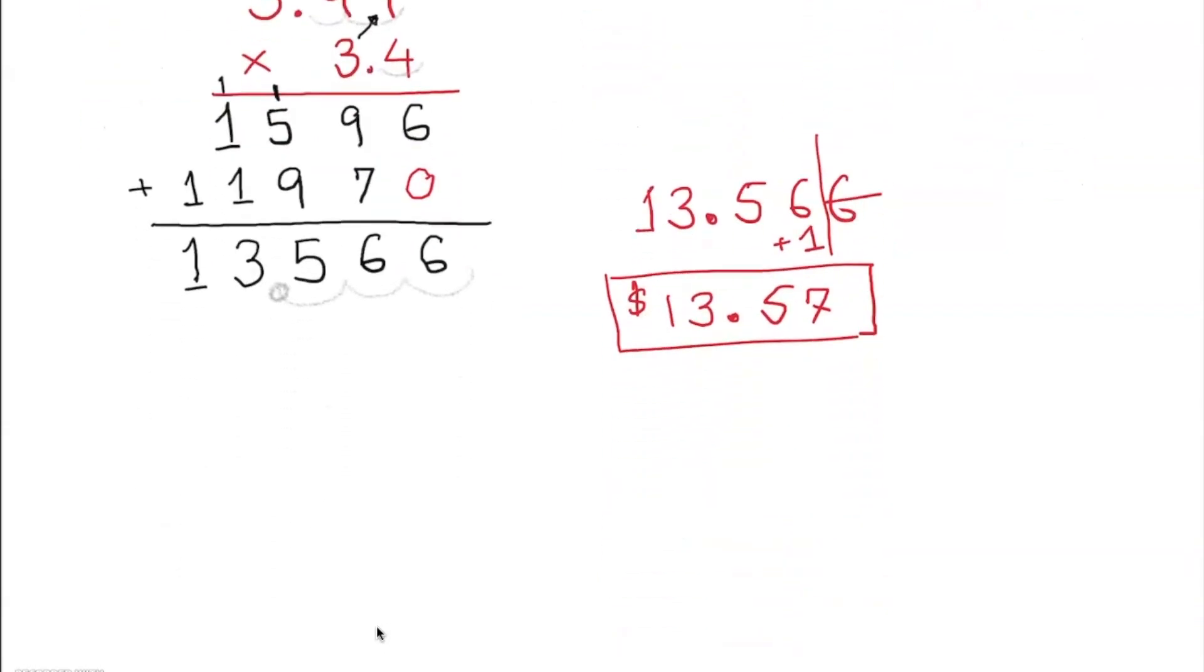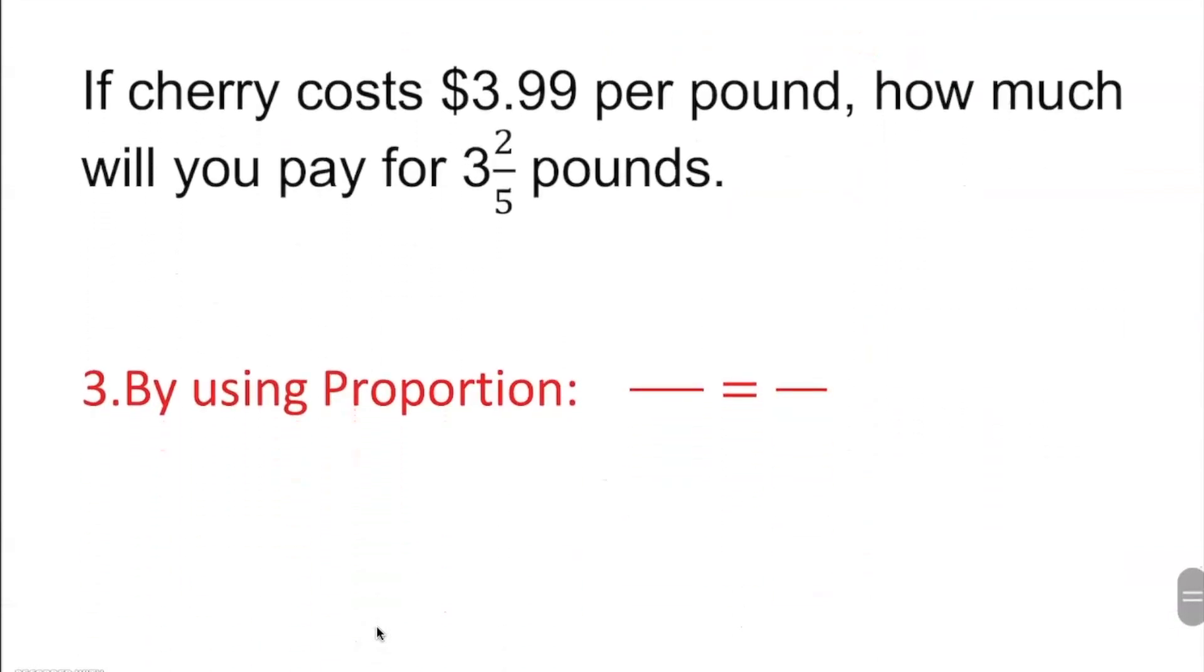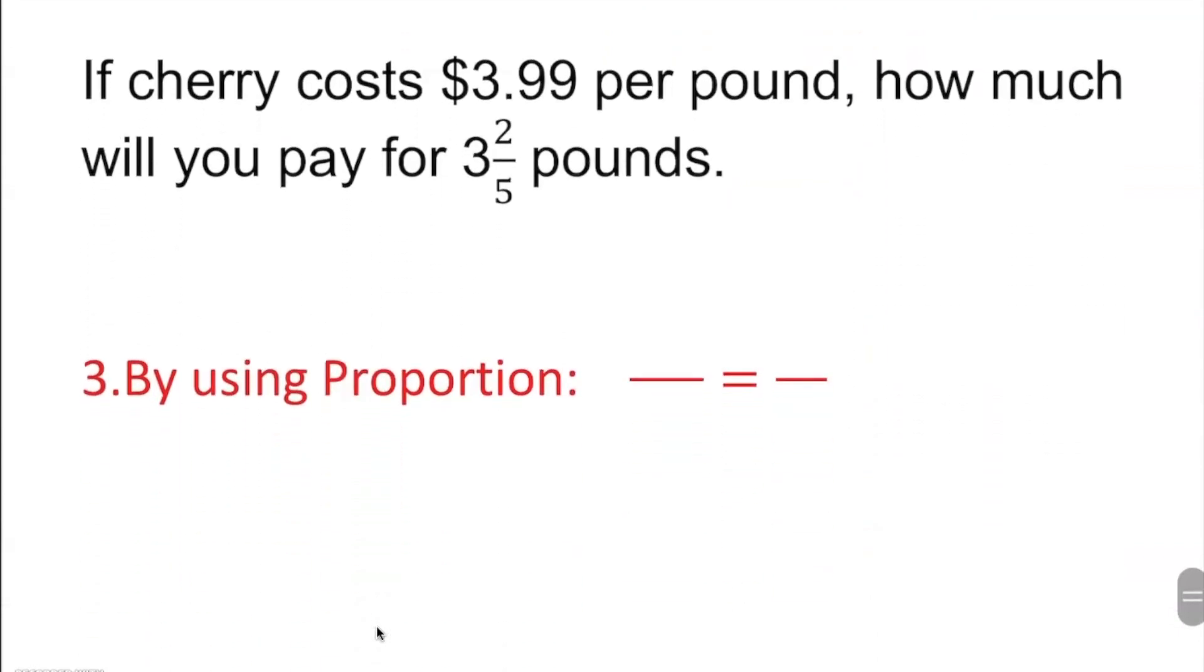Next thing, we're going to learn actually how to set up as a proportion. That's really important. Cool stuff actually. If we can set up as a proportion, I'm doing the same problem. $3.99 per pound. So if I put down the unit, pound, pound.